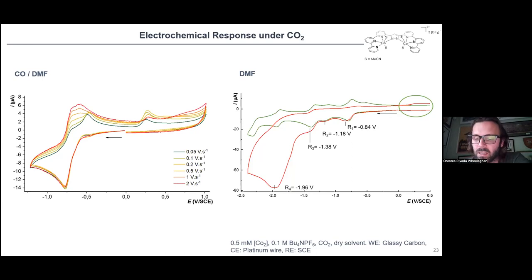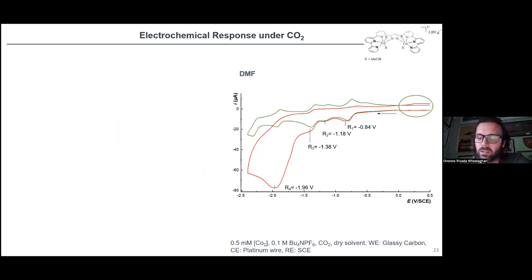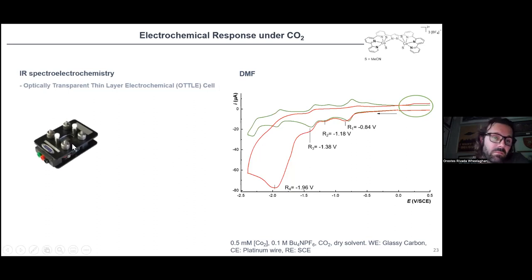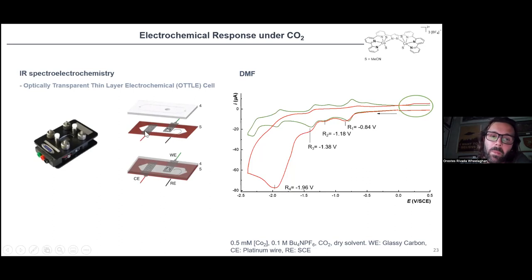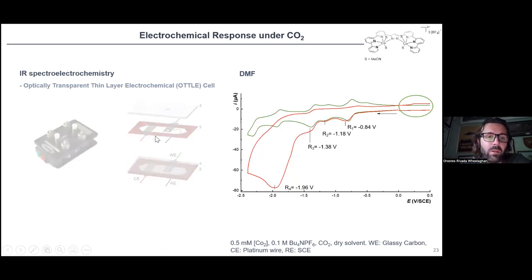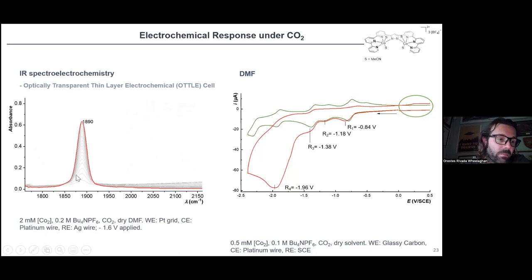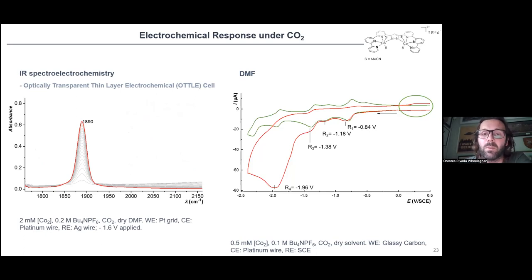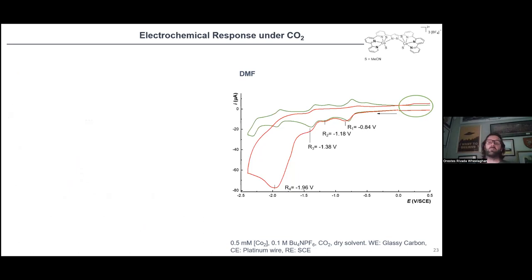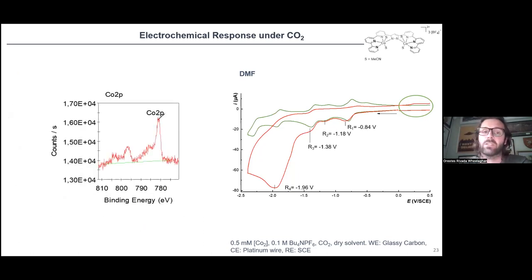To confirm CO generation directly, we used infrared spectroelectrochemistry — a common IR cell containing a small electrochemical cell inside. During controlled potential electrolysis under CO2, we observe generation of a new carbonyl band due to a cobalt-carbonyl bond, confirming that CO being generated comes from the reduction of CO2. However, under anhydrous conditions we again observe electrode passivation and low CO production from CO2, requiring us to change our approach.